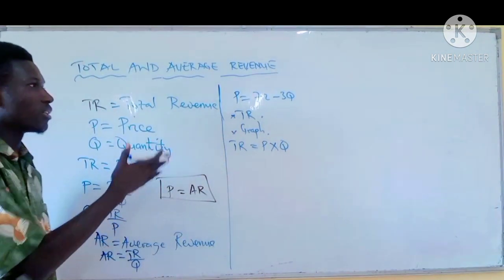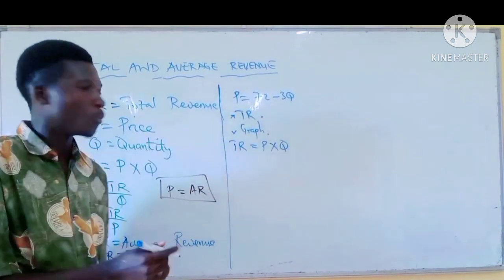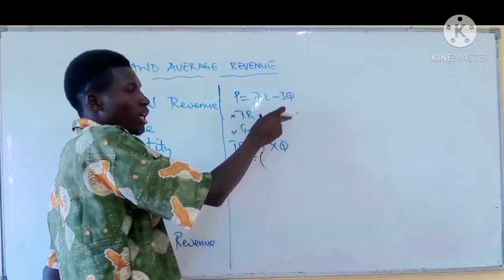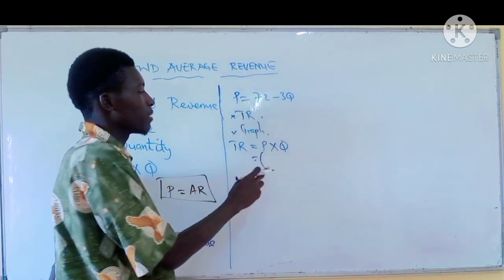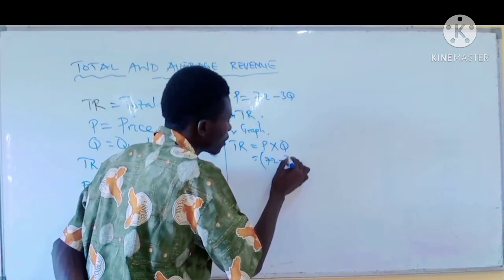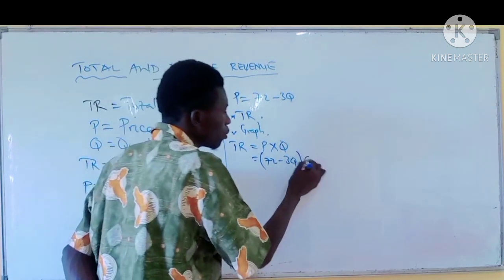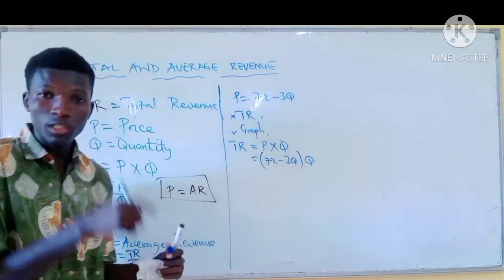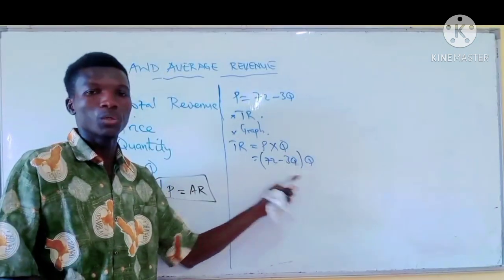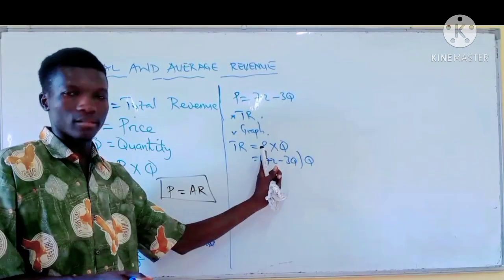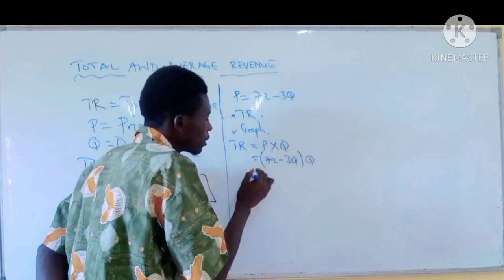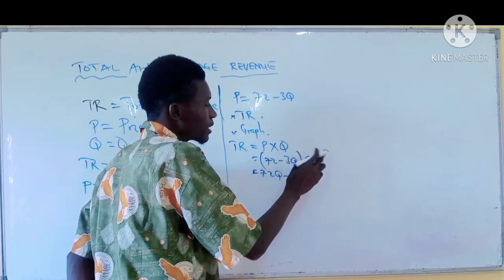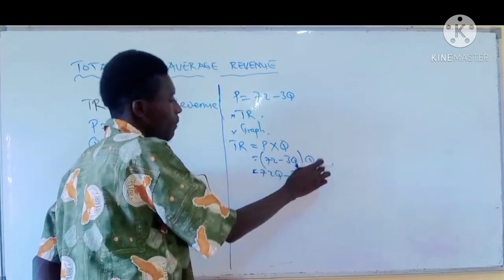You know your price but not your quantity. Your price in brackets — because it's an equation with a constant and a variable term, you put them in a bracket. So it's (72 minus 3Q) multiplied by Q. Q is outside, meaning it affects both terms. So: 72 multiplied by Q is 72Q, minus 3Q times Q is 3Q squared.